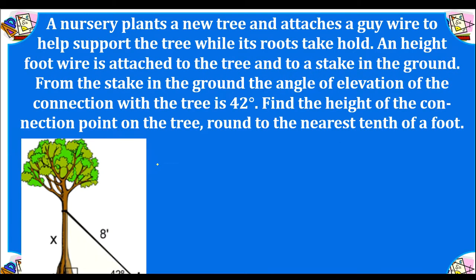Let's look at a few examples. A nursery plants a new tree and attaches a guy wire to help support the tree while its roots take hold. An 8-foot wire is attached to the tree and to a stake in the ground. From the stake in the ground, the angle of elevation of the connection with the tree is 42 degrees. We're going to find the height of the connection point on the tree, rounded to the nearest foot — we're trying to find how high from the ground it was connected.